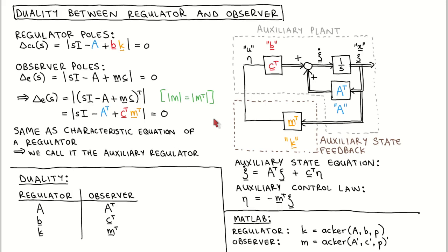We can summarize the duality between the regulator and the observer in a table. It says that the relationship between A, B, K, and the regulator poles is mathematically the same as the relationship between A transposed, C transposed, M transposed, and the observer poles.